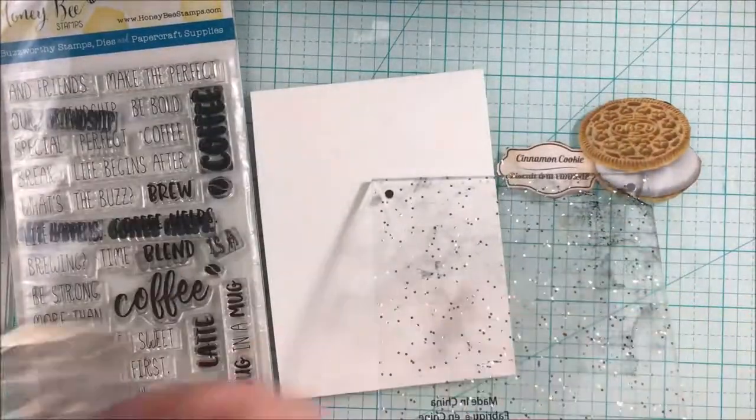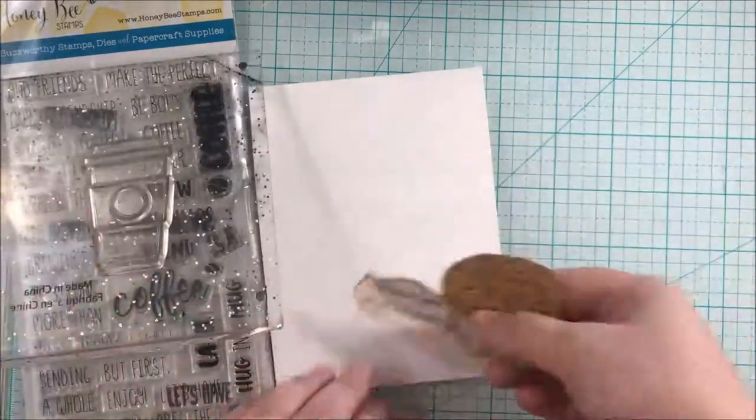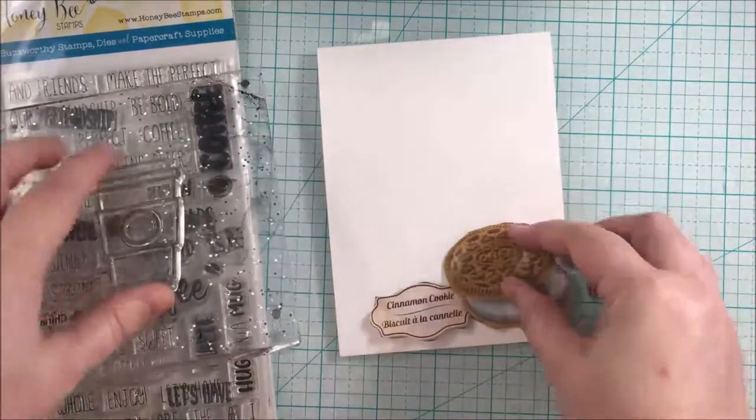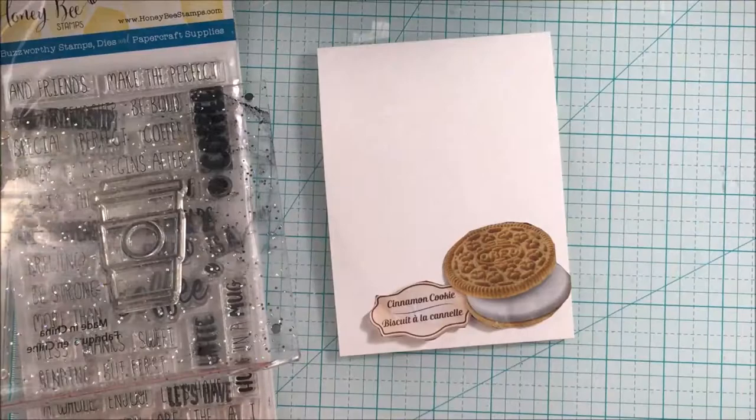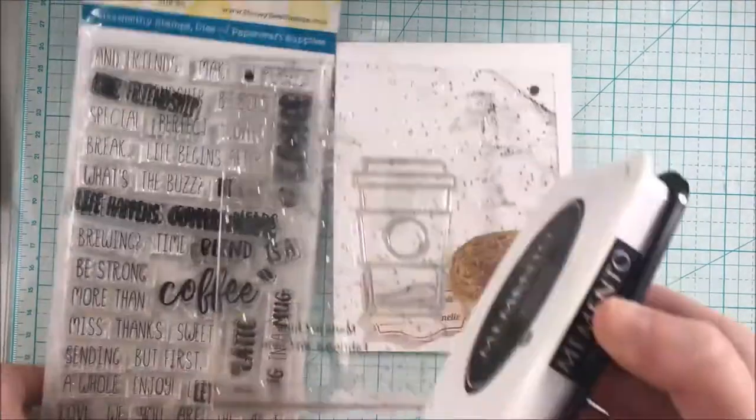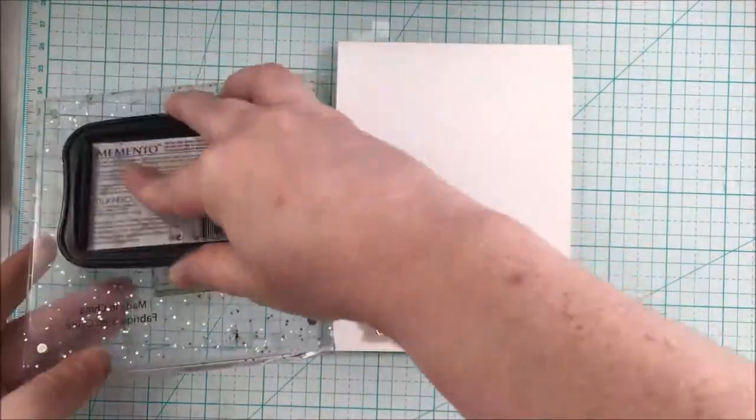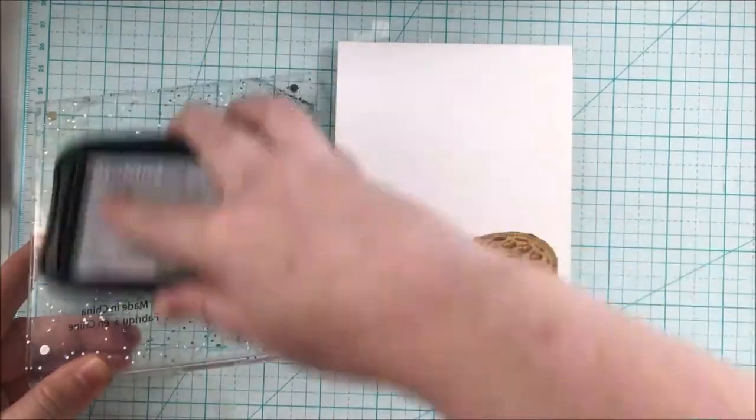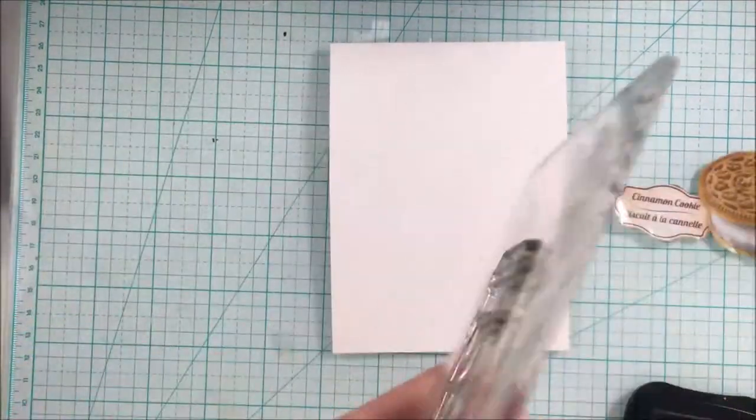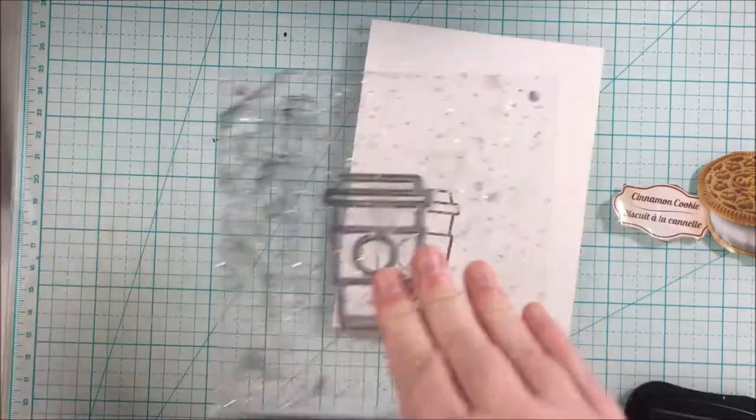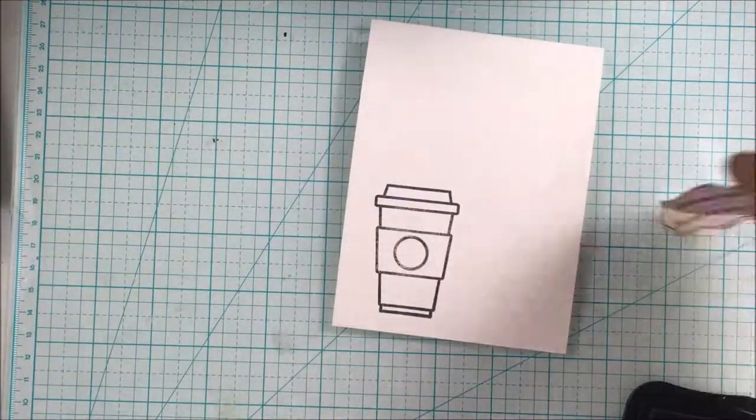I'm using this stamp from the Coffee Break set from Honeybee Stamps and just playing around with the positioning that I wanted, then using Memento Tuxedo Black ink to stamp the coffee to-go cup from that set.